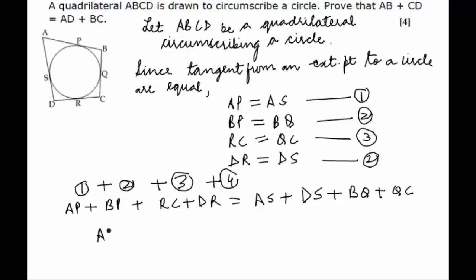Is equal to AB, RC plus DR is equal to DC, AS plus DS is equal to AD, and BQ plus QC is equal to BC. Hence proved.